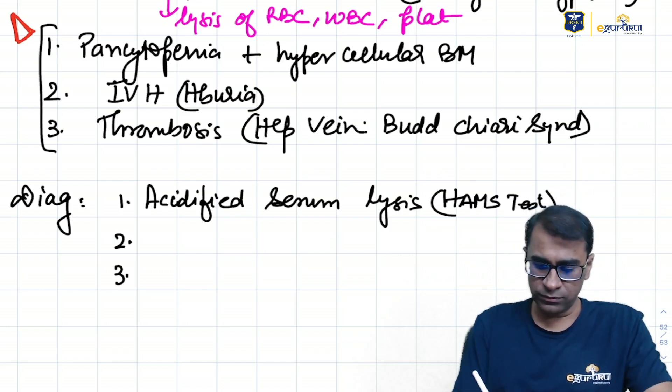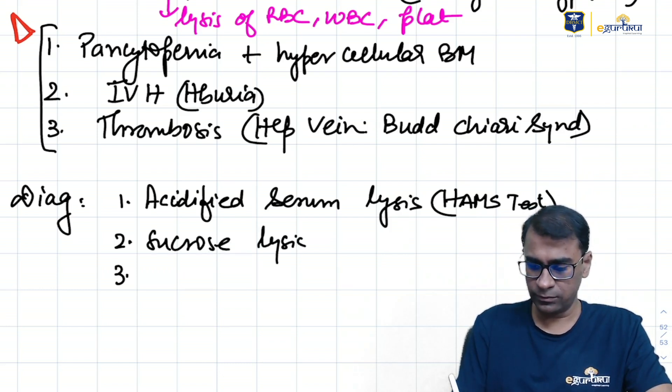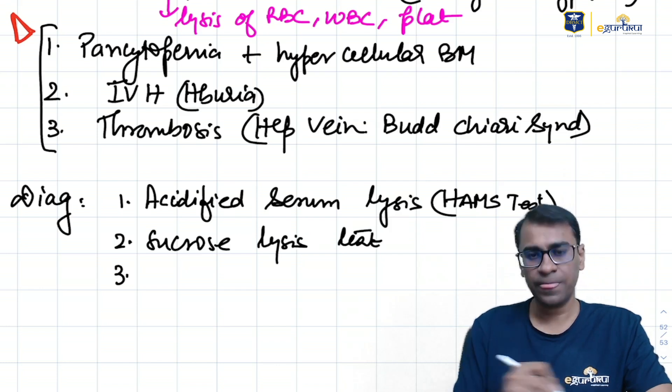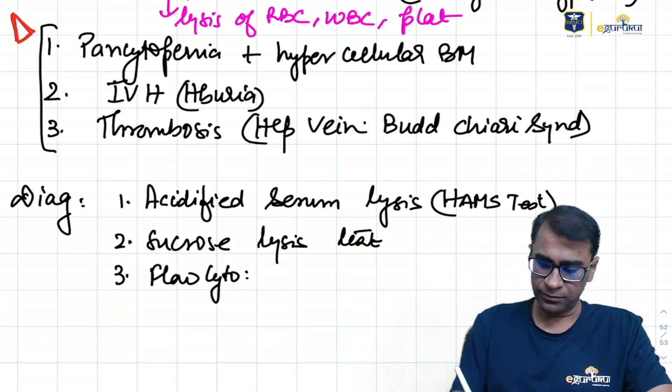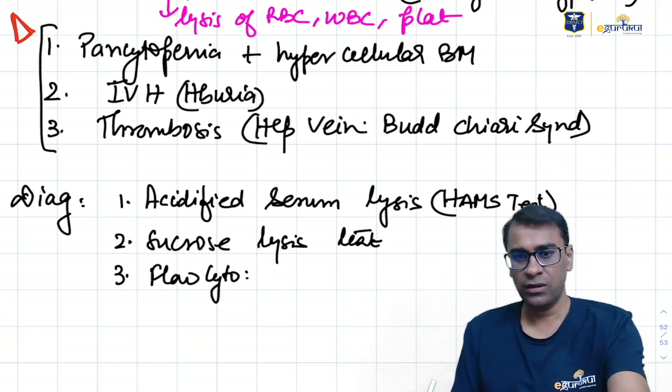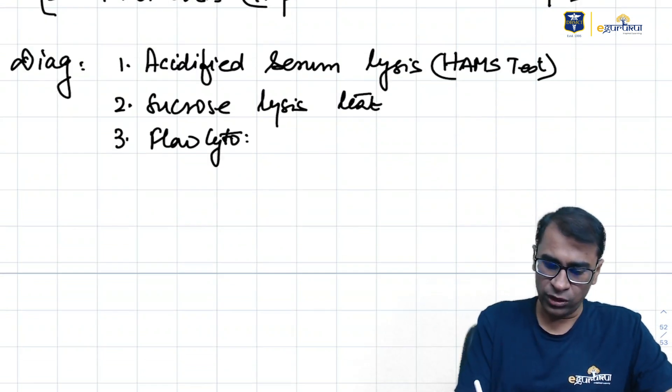We can also use the next test, sucrose lysis testing. And third one is the best one, flow cytometry. Flow cytometry is the best one.